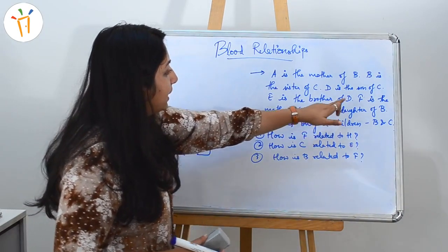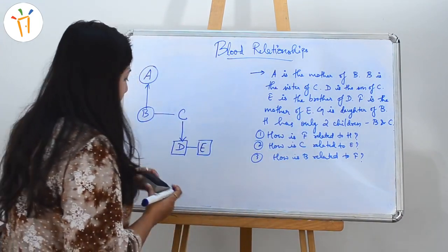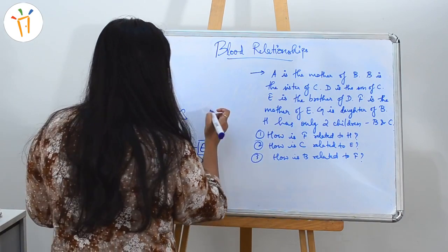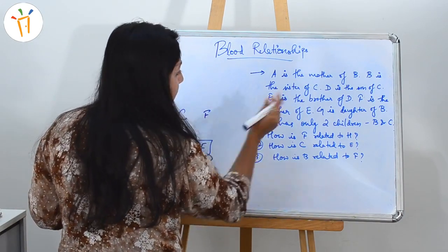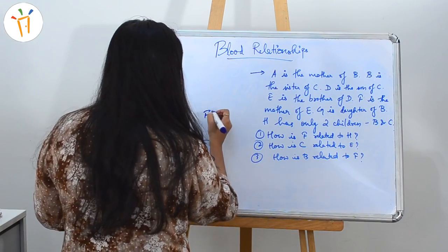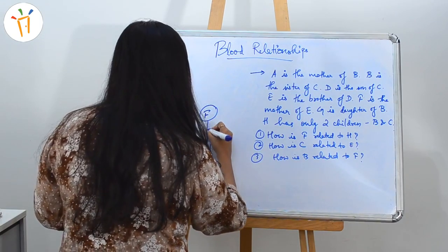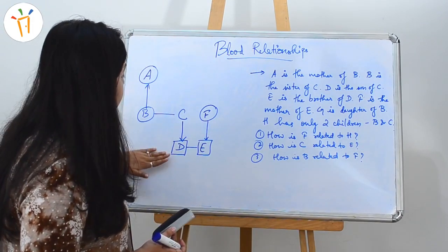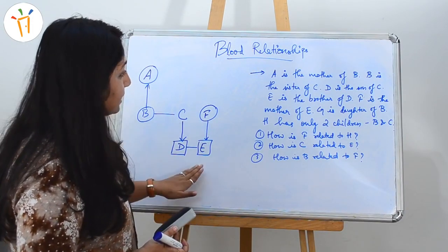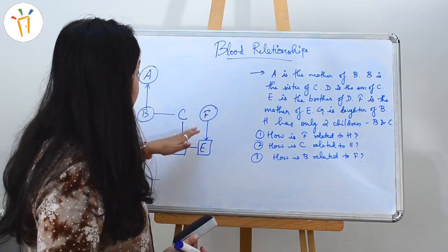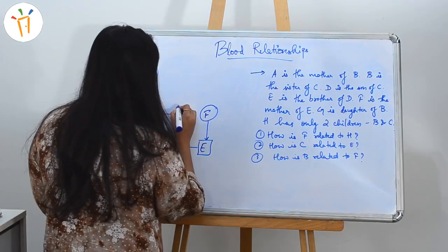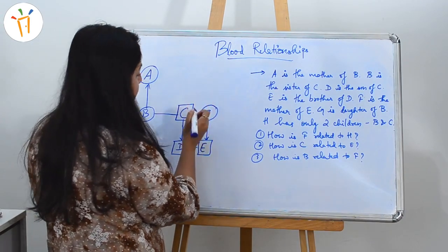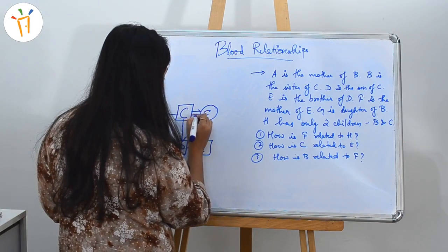The next line is F is the mother of E. We have E here and it says F is the mother of E. So, we will write F here and since F is the mother, we will denote it with a circle. Since previously D is the son of C, and now F is the mother of E, C will be the father. F is the mother — that means they are a couple.